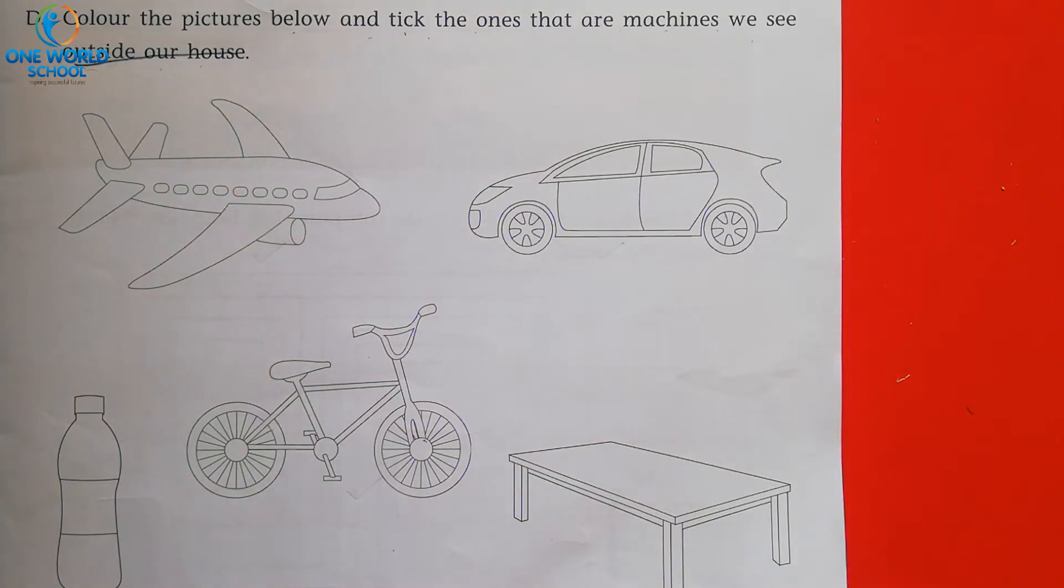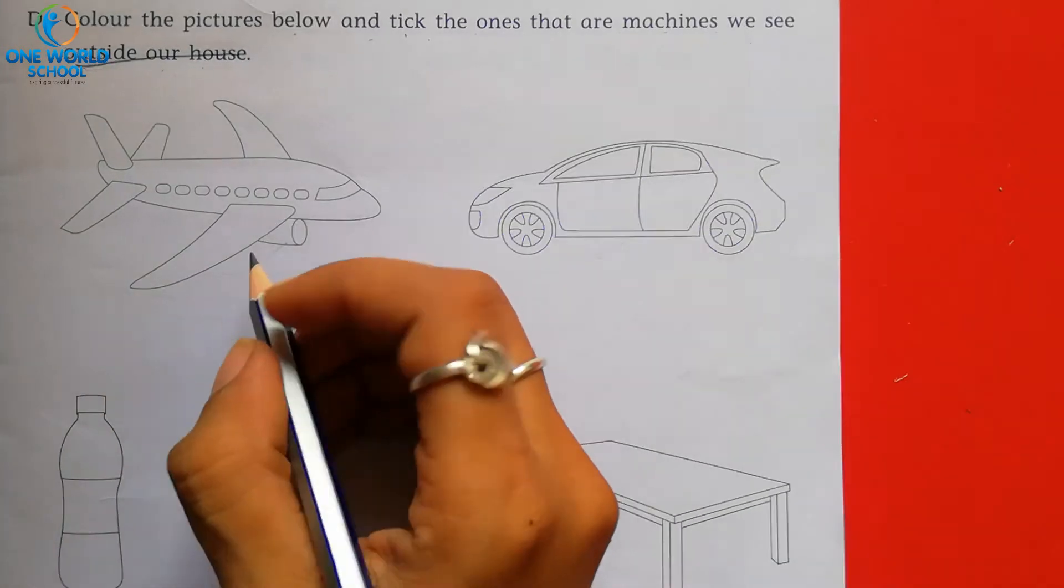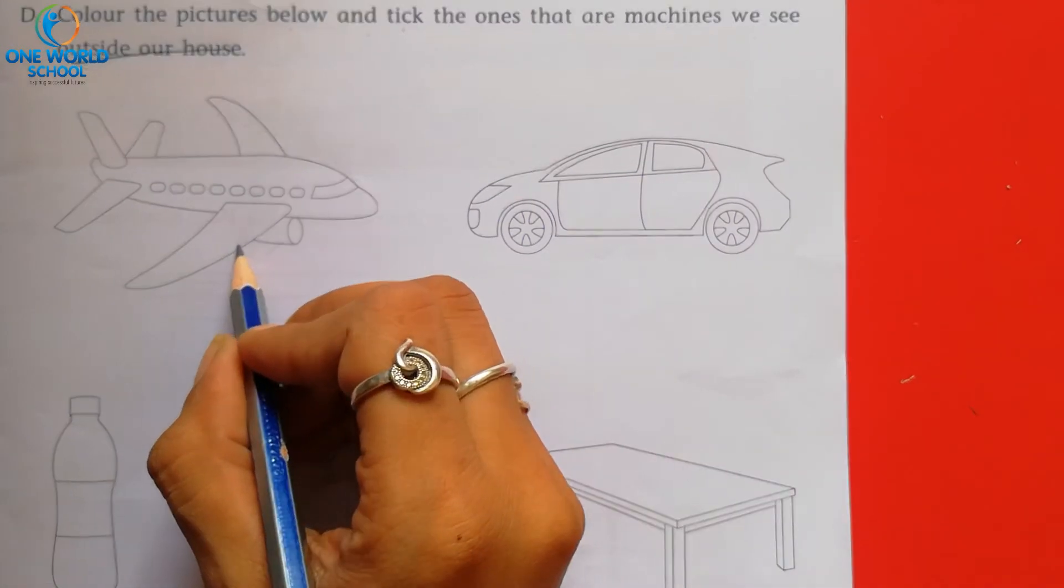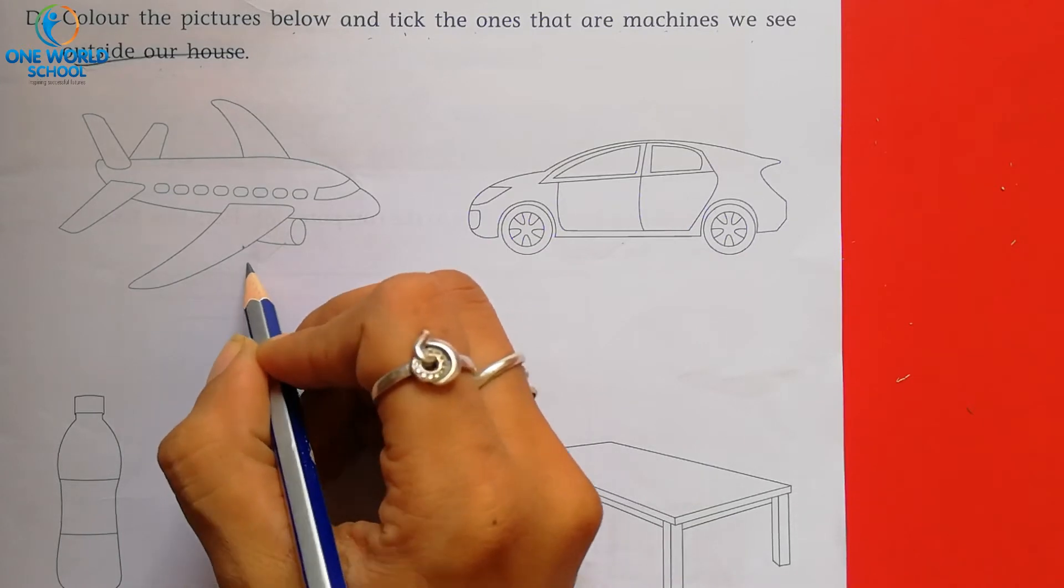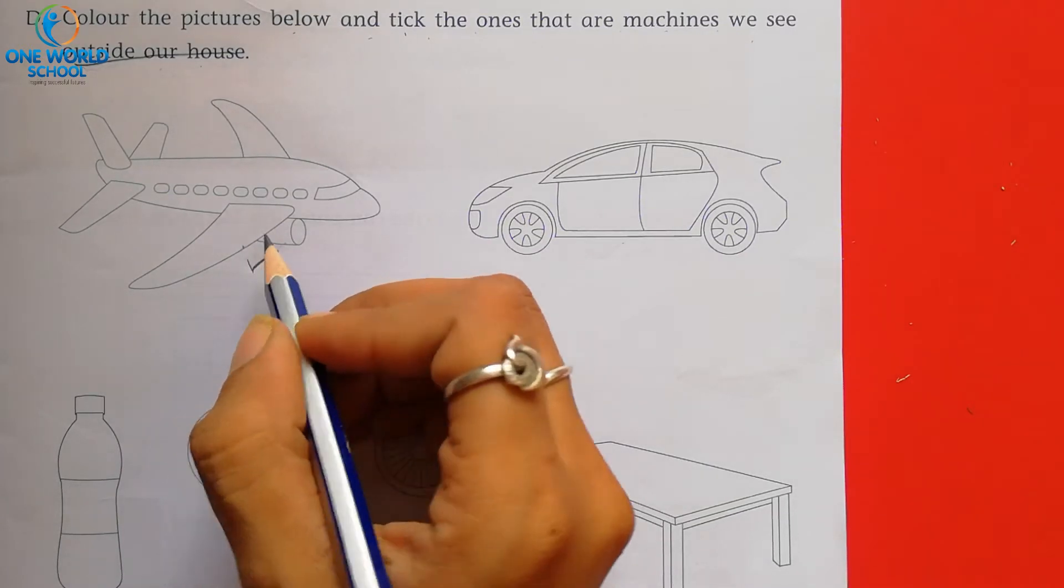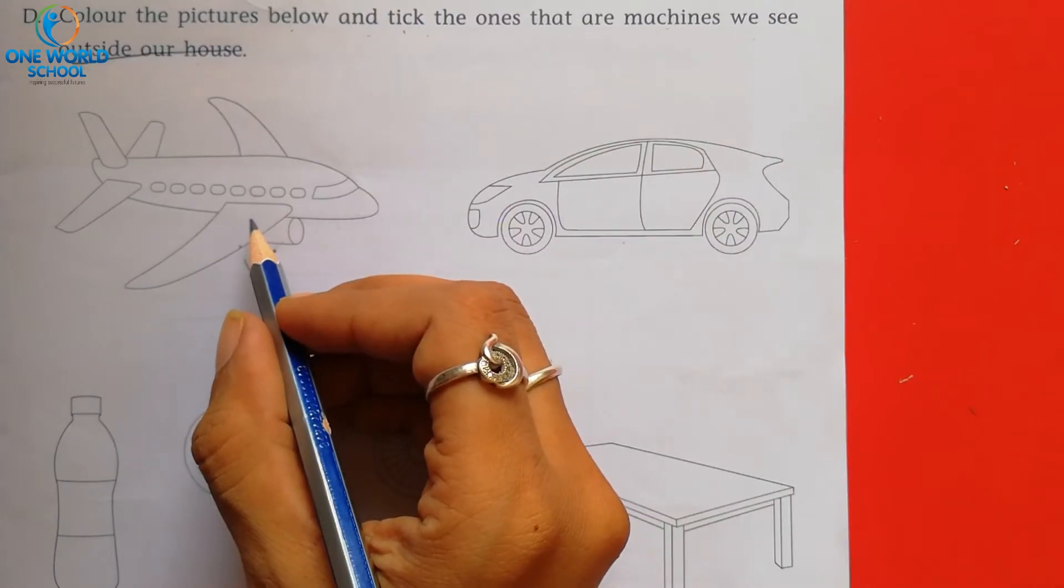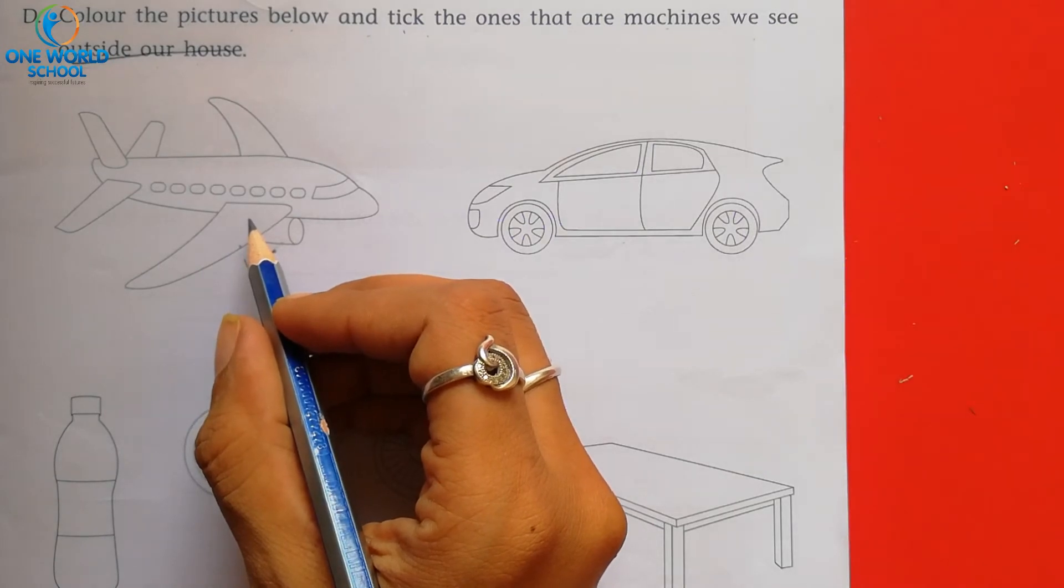So what are you doing? हमारे घर के बाहर क्या देखने को मिलता है? Aeroplane देखने को मिलता है? Yes. So we have to tick the picture and you can color in the airplane. You can color make an airplane.